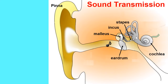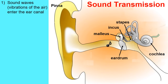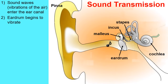In sound transmission, let's say you're listening to some music. Sound waves, which are simply vibrations in the air, are going to be funneled into your ear canal by your pinna. That's going to cause our eardrum to begin to vibrate.